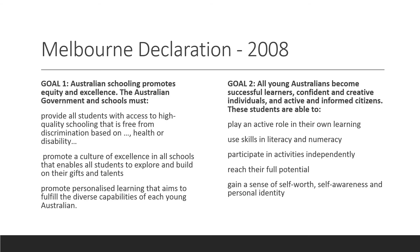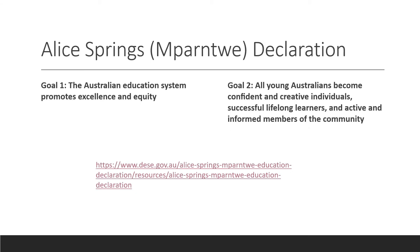The update to the Melbourne Declaration is the Parap Declaration, I believe is how we pronounce it. I strongly encourage you to have a look at the Alice Springs Parap Declaration. You'll notice that goal two has changed from the Melbourne Declaration, and there's a bit more detail in the Alice Springs Declaration about what we're doing.